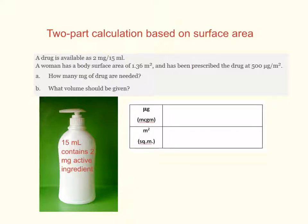The units involved in the first part of this problem are micrograms and square meters. There are two abbreviations for microgram — you'll see both on medication labels. Microgram with a Greek mu is the SI standard, and sometimes you'll see it abbreviated as MCG. A microgram is a very small unit: there are 1,000 micrograms in a milligram.